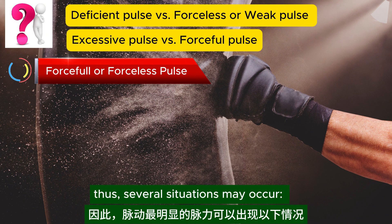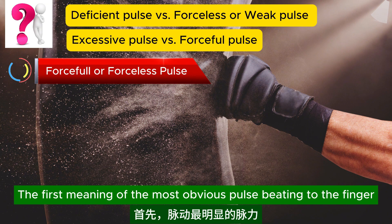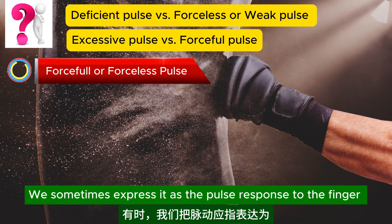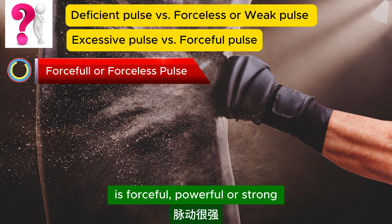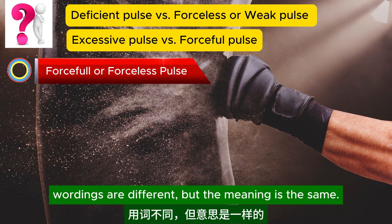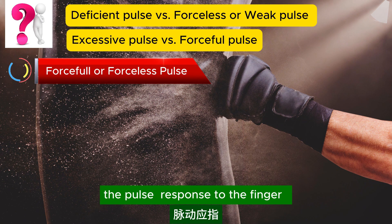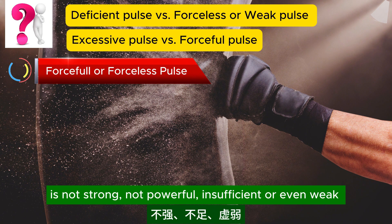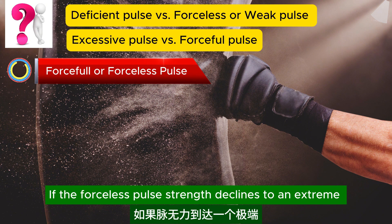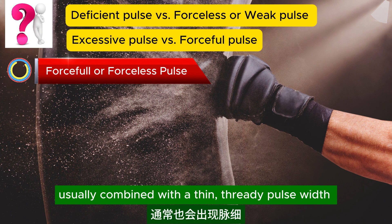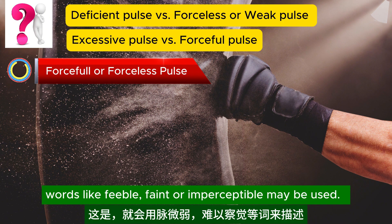Several situations may occur. First, the most obvious pulse beating to the finger is forceful — sometimes expressed as the pulse response being forceful, powerful, or strong. Second, the most obvious pulse beating to the finger is forceless — the pulse response is not strong, not powerful, insufficient, or even weak. If the forceless pulse strength declines to an extreme, usually combined with a thin, threaded pulse width, words like feeble, faint, or imperceptible may be used.